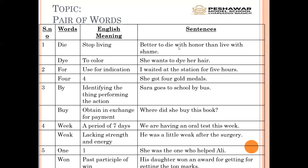The sentence for the first die is: 'Better to die with honor than live with shame.' Achha hai ke banda izzat se mare, be-izzati ki zindagi se achha hai ke banda izzat ki maut mare. Keep in mind — in previous lectures we did capitalization, so the B is capital at the start. And there is a full stop at the end of the sentence.